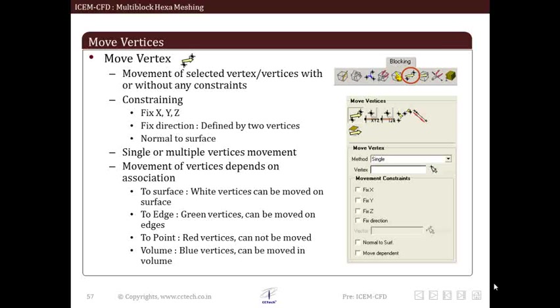We also have to specify movement constraint of vertices to be moved. There are different constraints such as fix XYZ allows us to fix XYZ axis direction. Fixed direction allows us to move vertex in fixed direction which is defined by two vertices. Normal to surface allows us to move vertex normal to surface. Whether a vertex can be moved or not depends on its association. Let us say that if vertex needs to be moved on surface it should be white as per the color code. Similarly if it is to be moved on edge only green vertices can be moved.